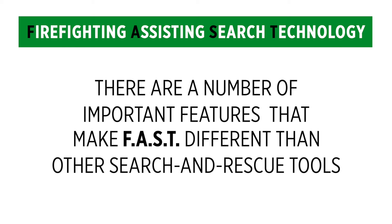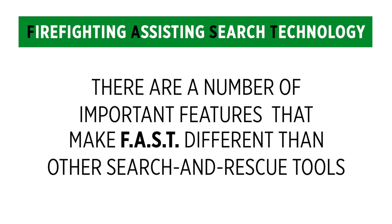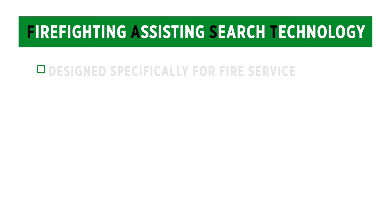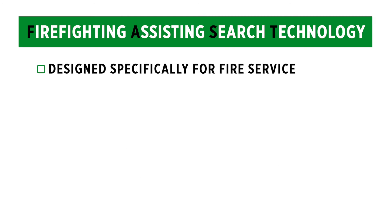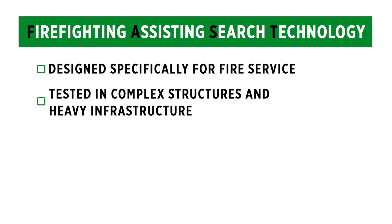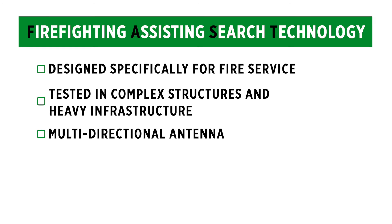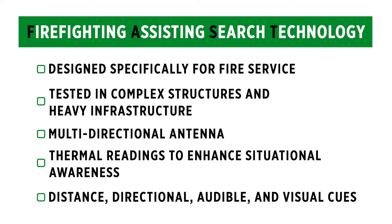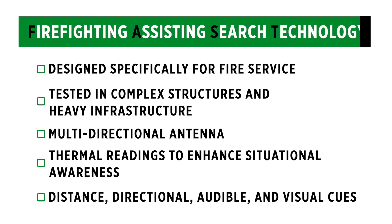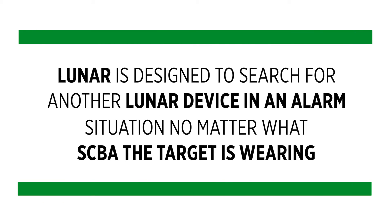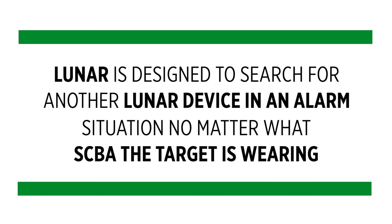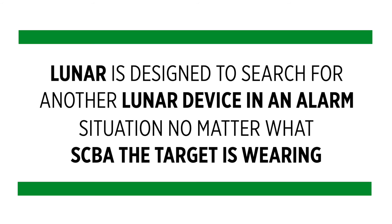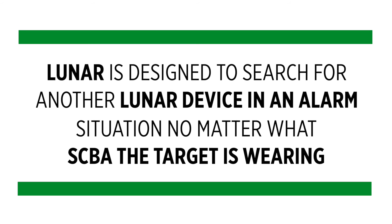There are a number of important features that make FAST different than other search and rescue tools. First, it's designed specifically for fire service. It's been tested in complex structures and heavy infrastructure, and it features a multidirectional antenna for getting accurate information. FAST provides thermal readings to enhance situational awareness, along with distance, directional, audible and visual cues. Lunar is designed to search for another Lunar device in an alarm situation no matter what SCBA the target is wearing, and even if they aren't on air.